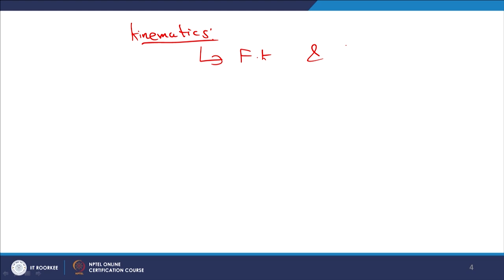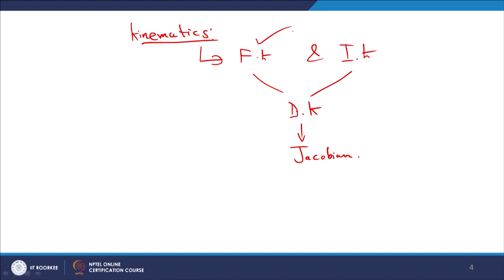First we start with the kinematics part. As we know, kinematics can be further divided into forward kinematics and inverse kinematics. In between this we have the differential kinematics where the Jacobian part comes into picture. We start with the programming of forward kinematics through MATLAB programming.